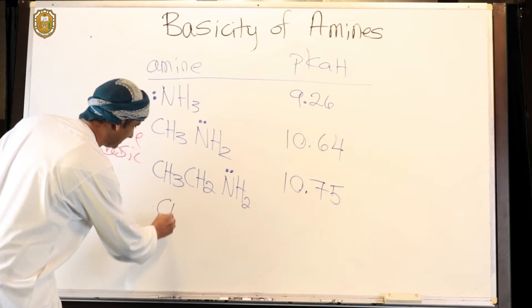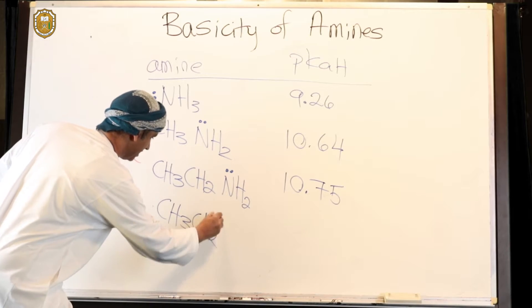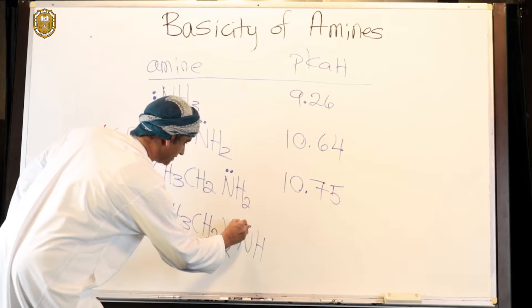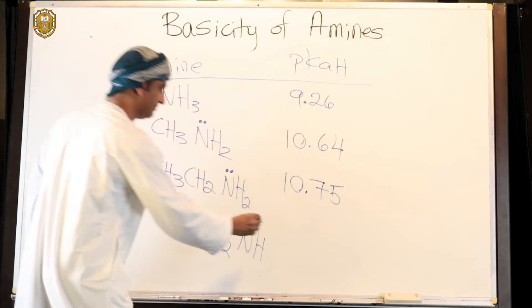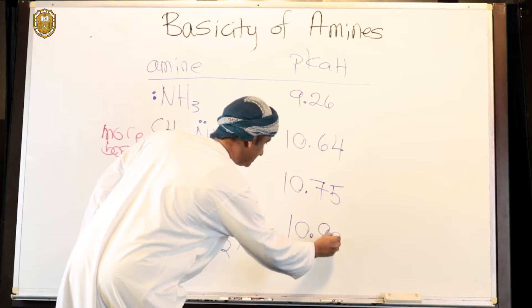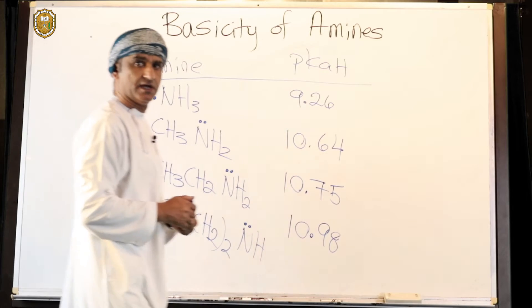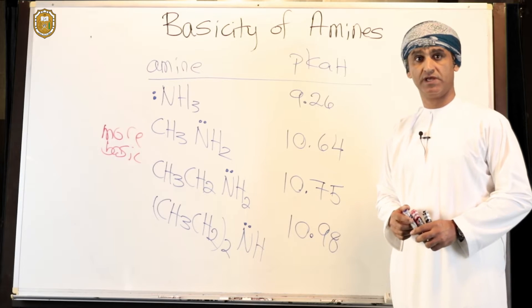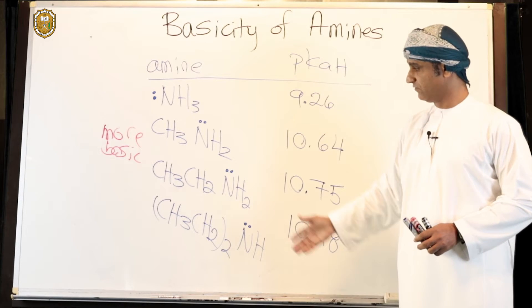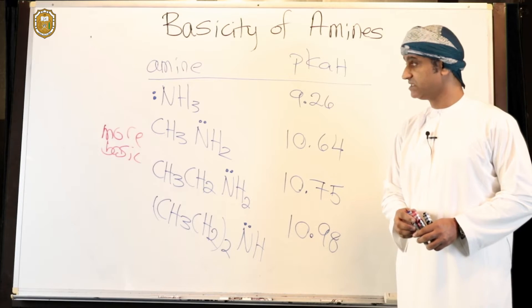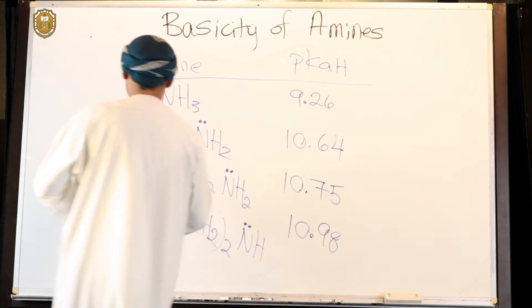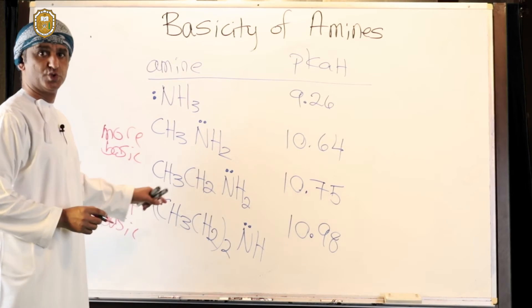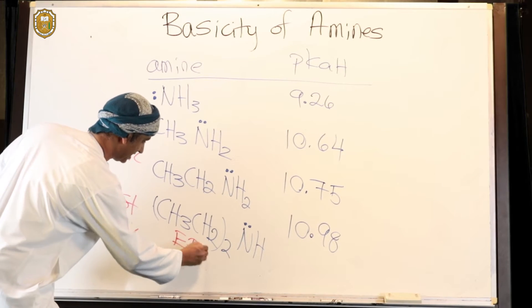Now, if we take diethylamine, so now there are two of them - diethylamine is the secondary amine. The pKa is actually 10.98, which is even higher than 10.75, suggesting that diethylamine is more basic. In this series of four, diethylamine is the most basic because it has two electron-donating groups by inductive effect.